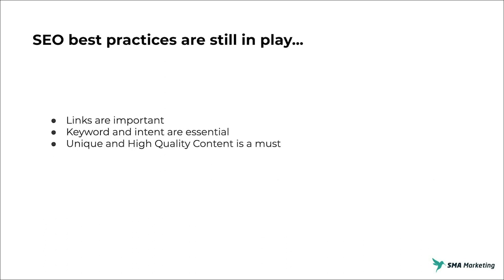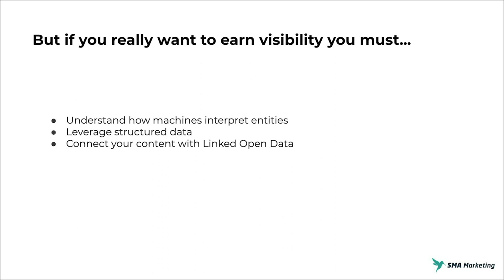Best practices are still in play. Links still play a role — they add value to your site and show authority and trustworthiness. Keywords and intent are essential; we look at the funnel, understanding how people move through it, doing our keyword and topic research to understand trends and how people search for solutions. We also have to have unique, high-quality content — we can't just create long-form content and think it's going to rank. It has to be unique, high quality, and address the needs and intent of users. But if you really want to earn visibility today, you have to first understand how machines interpret entities, understand at a base level how natural language processing works, and how search engines look at your entities within your content.